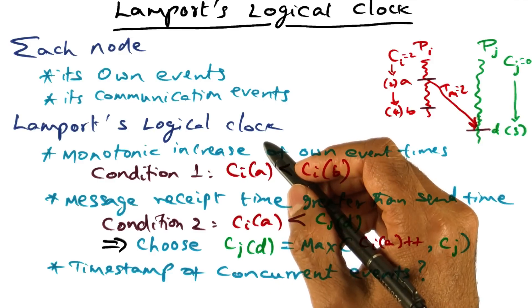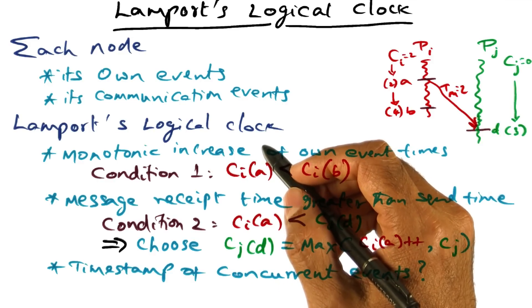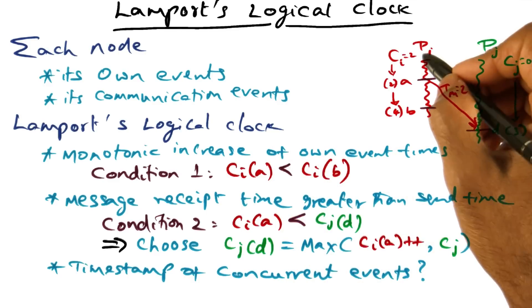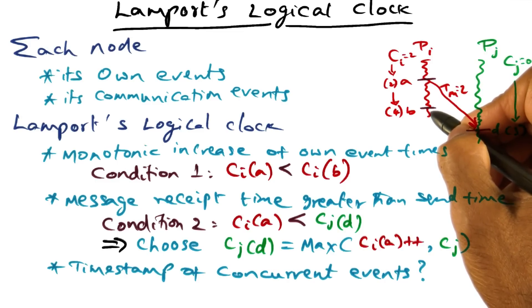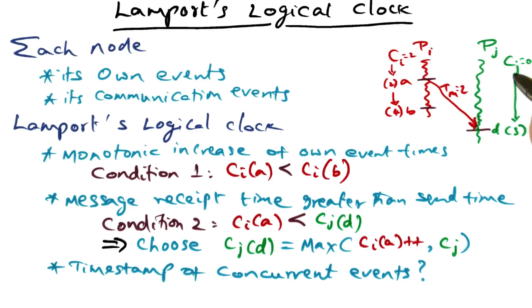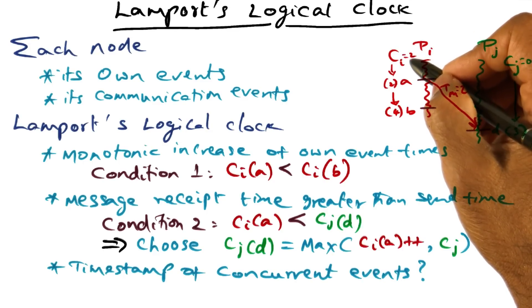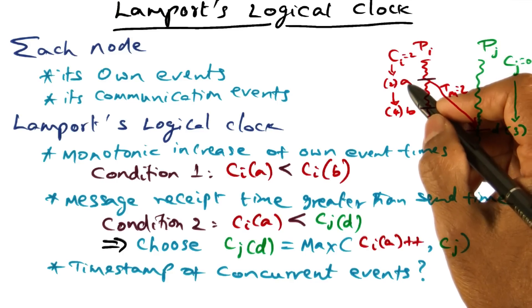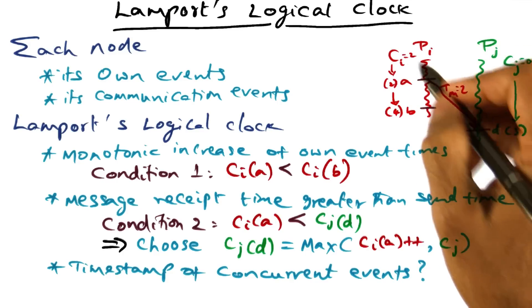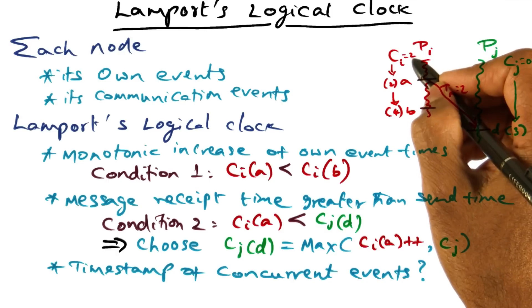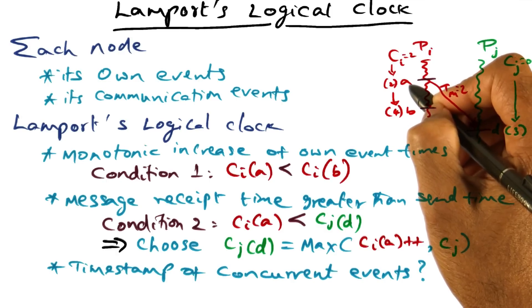Lamport's logical clock builds on this very simple idea: we want to associate a timestamp with every one of the events happening in every process in the entire distributed system. We're going to have a local clock — CI here and CJ here. This local clock can be a simple counter. When I want to associate a timestamp with a particular event in my process, I look at this counter and see what its value is.